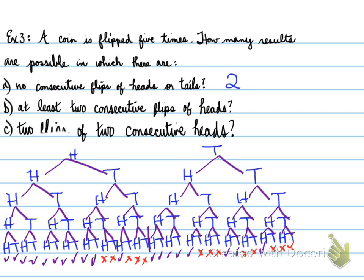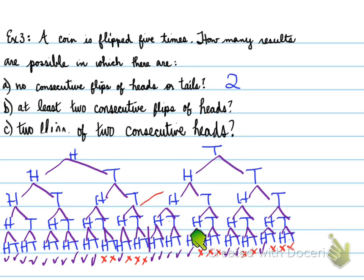How many altogether consist of at least two consecutive flips of heads? We count the number of check marks, going through: 1, 2, 3, 4, 5, 6, 7, 8, 9, 10, 11, 12, 13, 14, 15, 16, 17, 18, 19. It looks like there are 19 results with at least two consecutive flips of heads — 19 altogether.